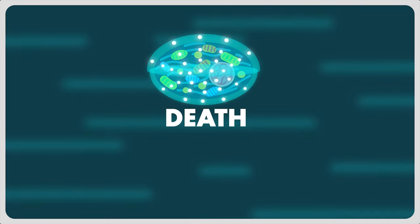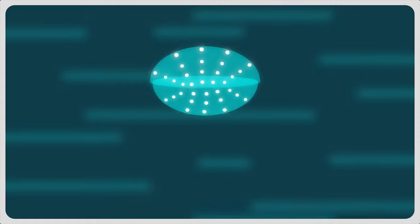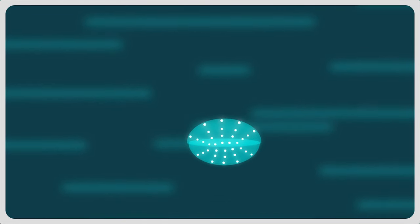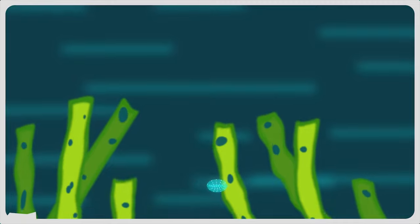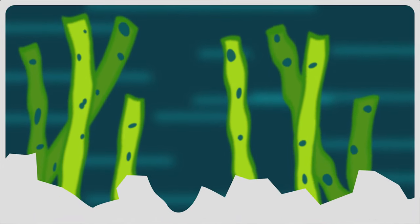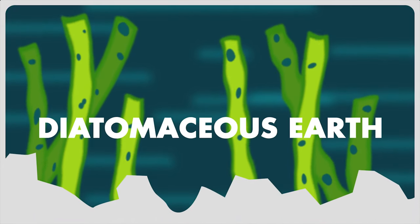When diatoms die, their indestructible cell wall gets deposited at the seabed producing large rock-like formations called diatomaceous earth. This acts as a reservoir of silica and is used by us in several industrial processes.